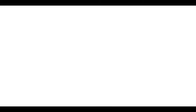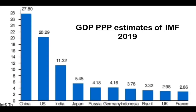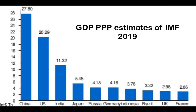The graph shown here is the IMF's estimate of GDP by purchasing power parity. GDP PPP is useful in comparing the living standards of different countries. As you can see, developing countries like China, India, Indonesia, and Brazil are climbing up the ladder, whereas developed countries like the USA, Japan, Germany, UK, and France are falling behind due to slow economic growth.